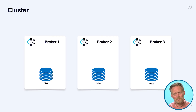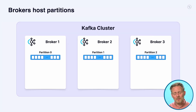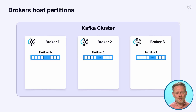Collectively, these brokers — we have a big cluster of three of them — they form a Kafka cluster. Each broker hosts Kafka partitions, as we talked about in the previous module. In that example, our topic had three partitions, and you can see they're spread out over these three brokers, with each broker holding one of the partitions.